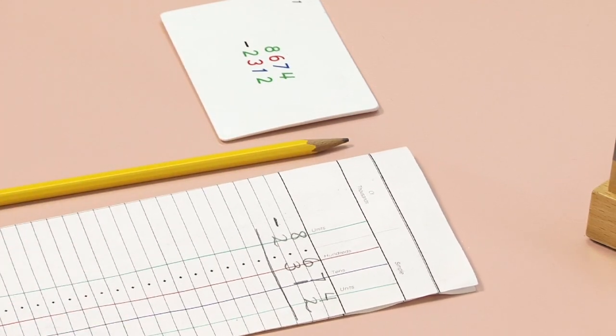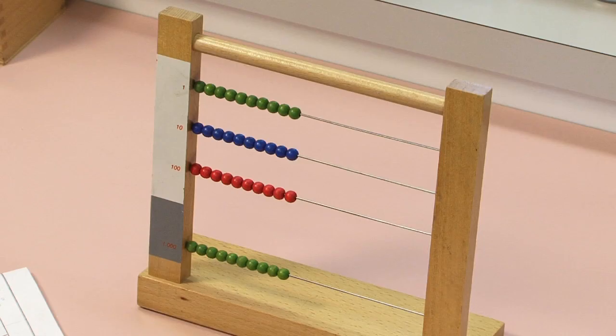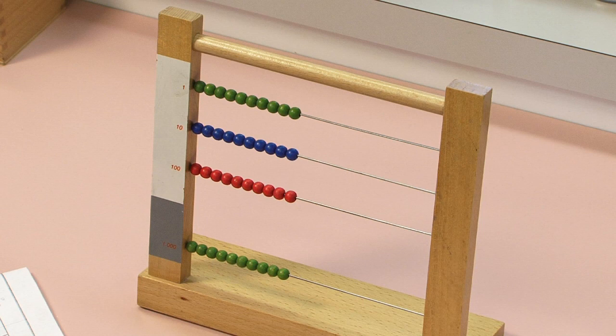Now that I've written my problem on my paper, I'm going to build the number on the small bead frame. Subtraction problems are a little bit different on the small bead frame. I'm only building the very top number, 8,674.